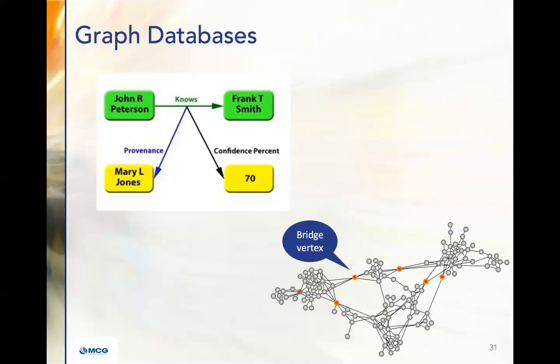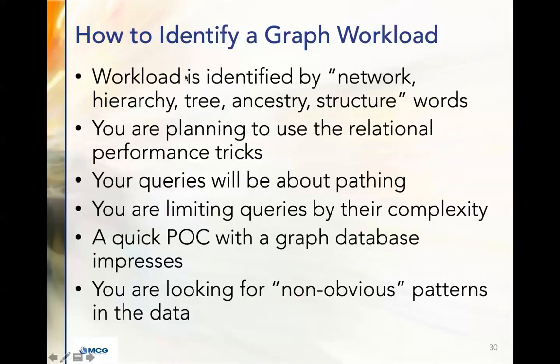These graph capabilities aren't limited to pure graph databases anymore. Relational database vendors have added a lot of graph capabilities — in many cases the algorithms I mentioned, pointing them at nodes in your relational database. So if you're struggling with a workload identified by those graph-related words, think about that alternative.